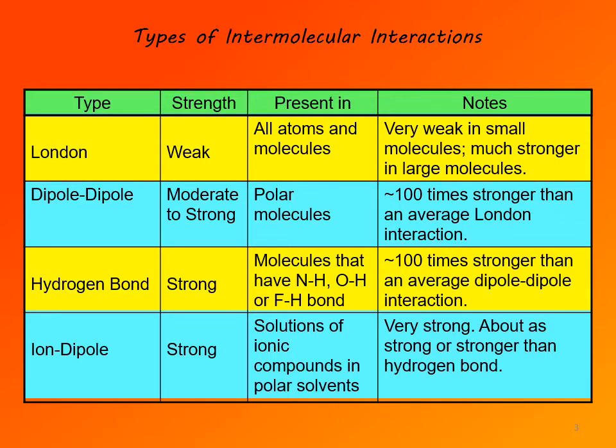Finally, we have one special type of interaction — ion-dipole interaction — which is a very strong interaction, but it's present only in solution, and only in solution of an ionic compound in polar solvents. As you probably know from general chemistry, ionic compounds are dissociated into individual ions in solution of polar solvents, and those ions form ion-dipole interactions with molecules of the solvent.